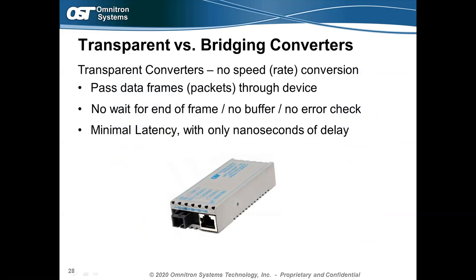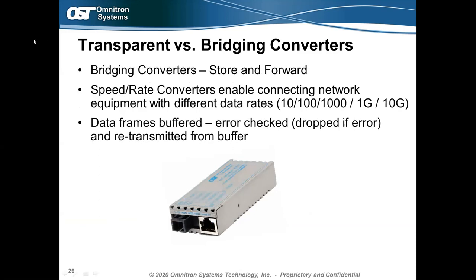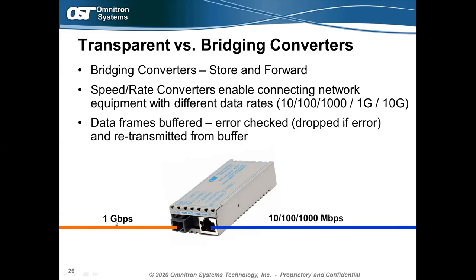Transparent media converters have no speed or rate conversion — packets pass straight through the device with minimal latency. This is ideal for critical applications where timing is important, such as financial or medical environments. Bridging converters use store-and-forward technology, buffering data frames and checking for errors. These handle different data rates — for example, a 1-Gig fiber line dropping off 10 Meg, 100 Meg, or Gigabit connections.